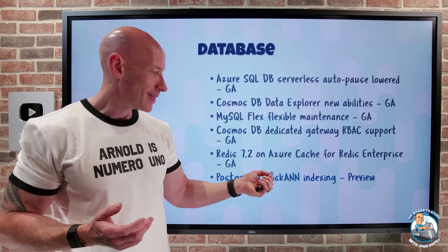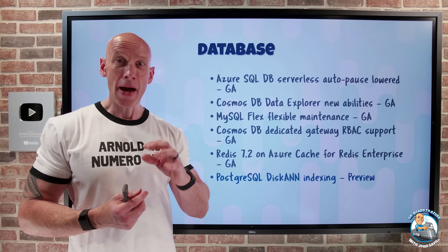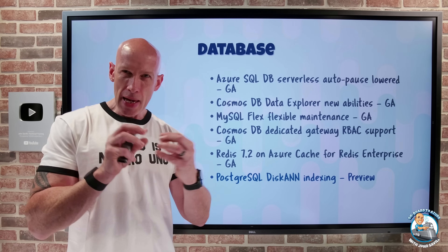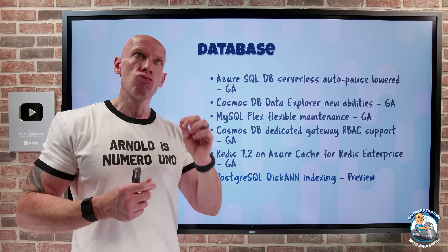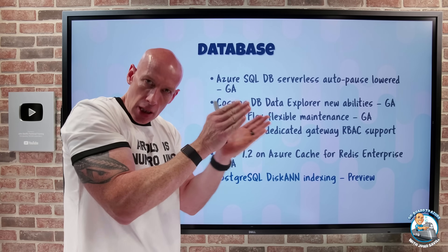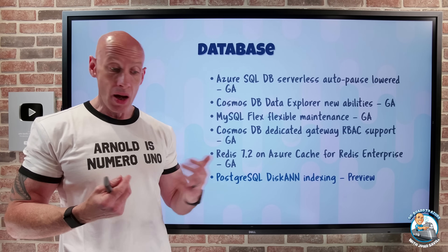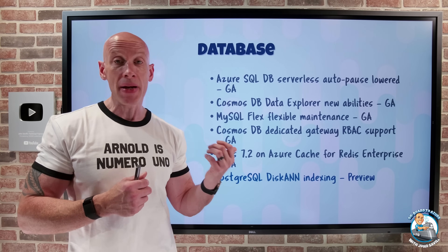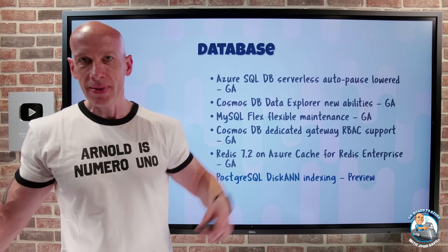PostgreSQL Flexible now has disk ANN indexing, and that's in preview. This is all about vectors — natural language type interactions where one word can mean many different things and many words can mean the same thing. Traditional lexical keyword matches don't work well, so we use vectors — huge dimensional arrays that represent the semantic meaning of data — to do nearest neighbor searches to find the vectors with the closest semantic meaning. Disk ANN is the same one used by Bing and Microsoft 365. It has higher accuracy and higher performance compared to the existing vector capabilities in PG vector. That will help with your natural language and generative AI searches for retrieval augmented generation.